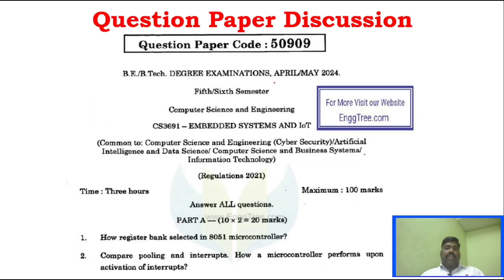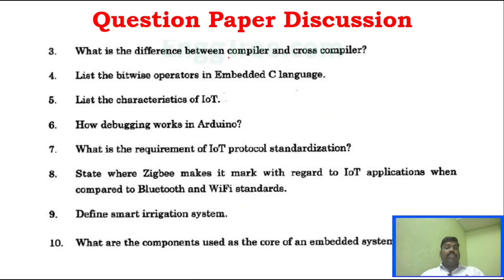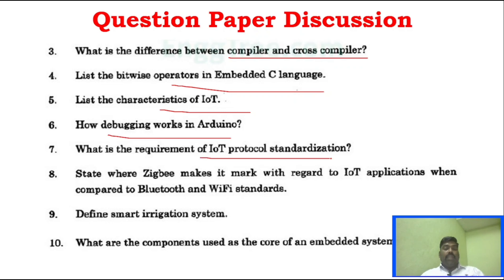For April/May 2024 paper, the 2-mark questions include: Register bank selection in 8051 microcontroller, compare polling and interrupts, difference between compiler and cross compiler, operators in embedded C program, characteristics of IoT, how debugging works in Arduino, requirement of IoT protocol standardization, state the role of Zigbee with regard to IoT application, smart irrigation system, and what are the components of a core embedded system.